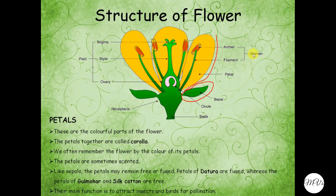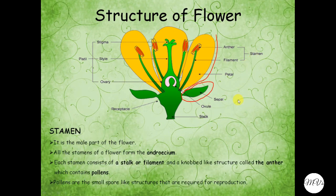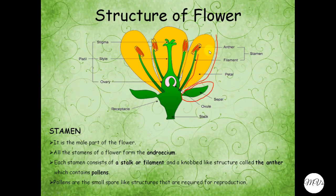The next part is stamen. It is the male part of the flower. All the stamens of a flower form androsium. Each stamen consists of a stalk or filament and a knob-like structure called anther. This is the anther which contains pollens.